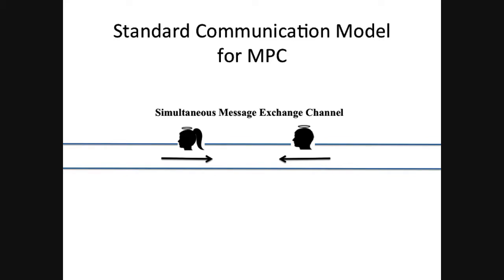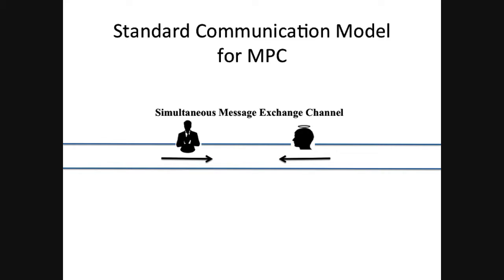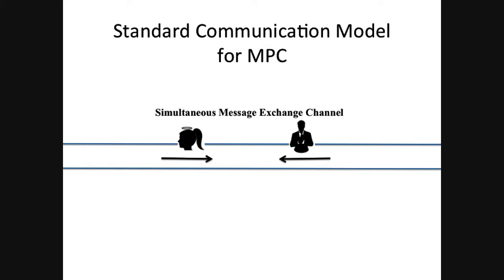Moreover, in the multi-party setting, the standard communication model is that in each round every party can simultaneously send a message — both parties send in the same round. This holds in the presence of a rushing adversary. The power of a rushing adversary is that he can, for example, first corrupt Alice, wait for the message from Bob, and then decide his message. Likewise, he can corrupt Bob, wait for the message from Alice, and then send his message.